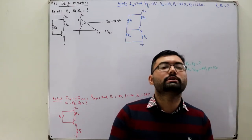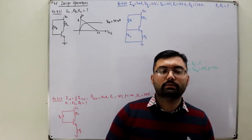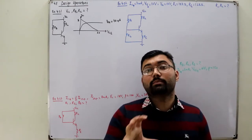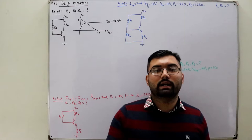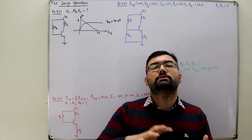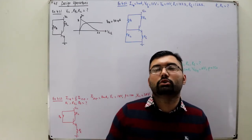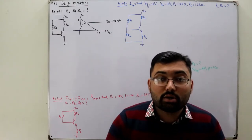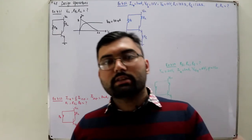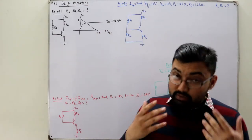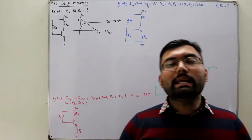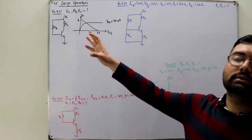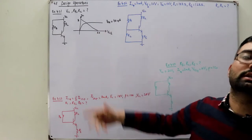The design is somewhat opposite to that of the analysis. In the analysis, you are given the values of the resistances — the circuit parameters are given — and you are asked to find the unknown parameter, the current and voltage. In the design operation, this is opposite: you are given the voltages and the currents, and you are asked to find the circuit elements — for instance, the resistances.